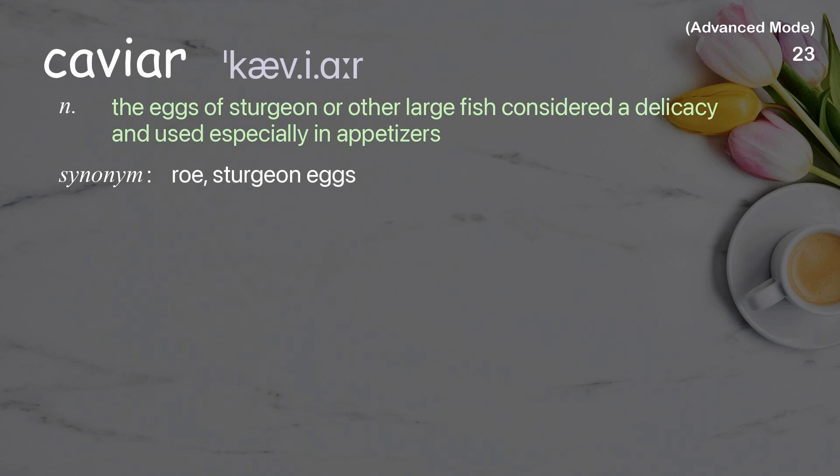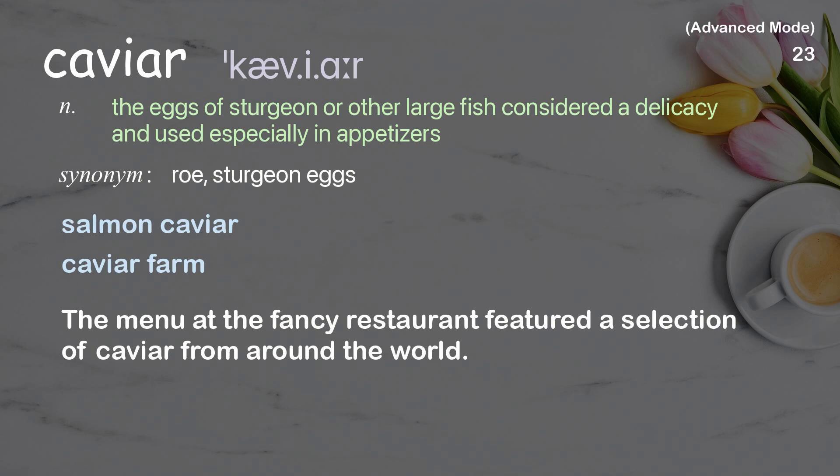Caviar. The eggs of sturgeon or other large fish, considered a delicacy and used especially in appetizers. Examples: salmon caviar, caviar farm. The menu at the fancy restaurant featured a selection of caviar from around the world.